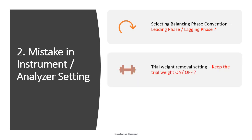The next setting is the trial weight removal setting. During balancing, the analyzer may ask whether to keep the trial weight on or off. If you select 'off,' you must remove the weight from the rotor. Sometimes this step is missed, or the wrong setting is selected and the trial weight is left on the rotor, which will not give the desired result.